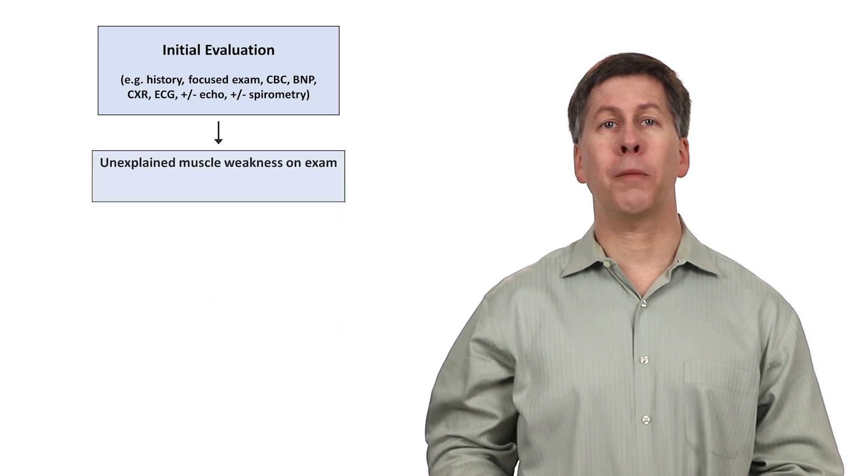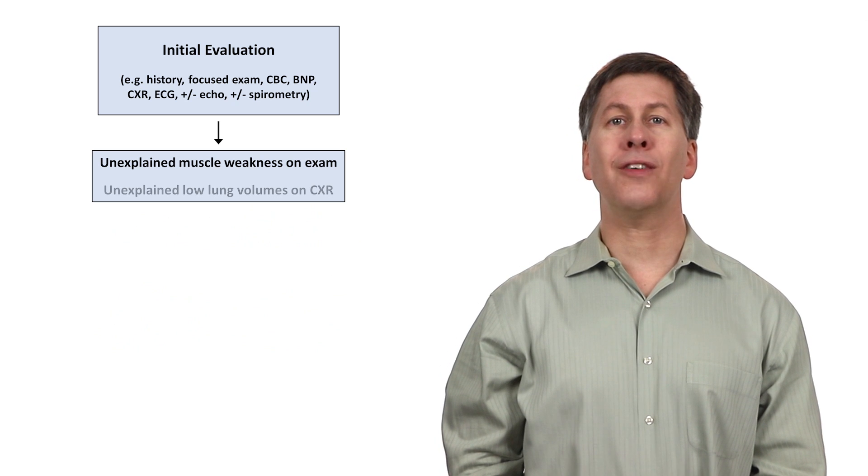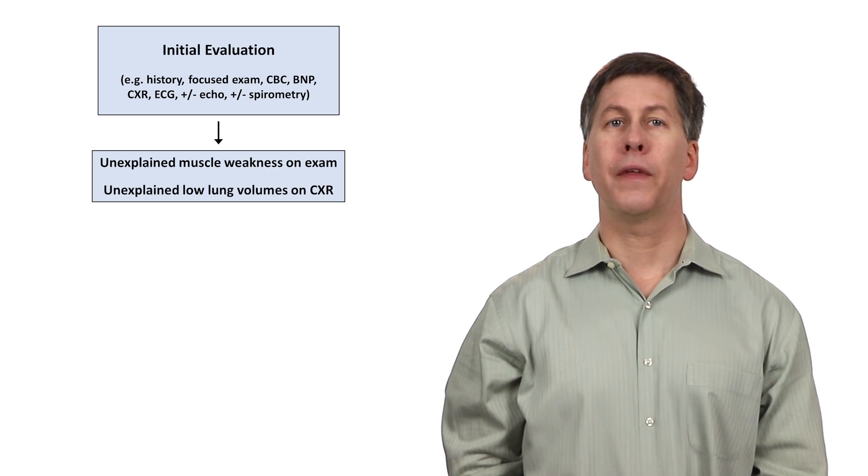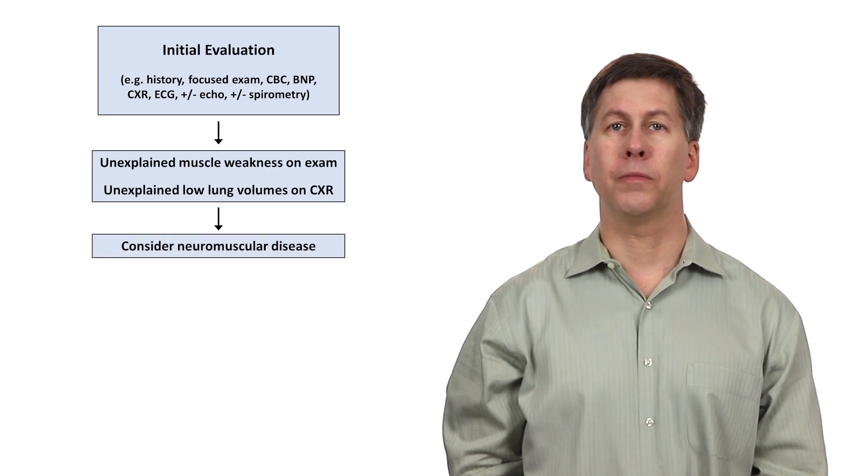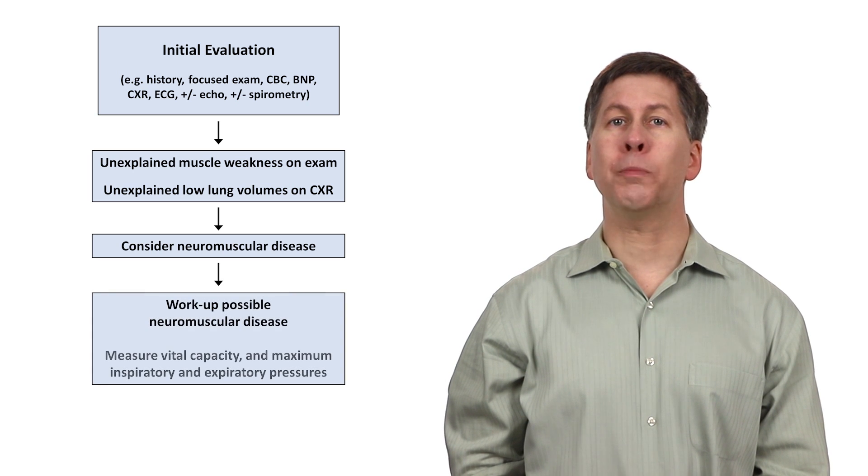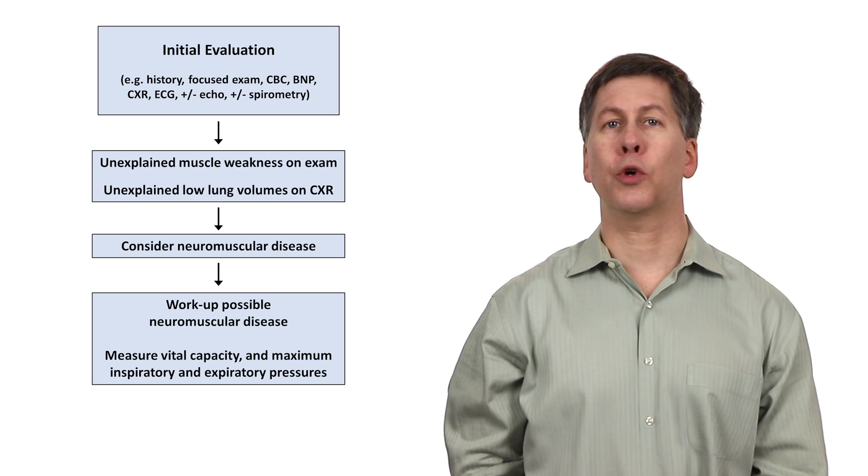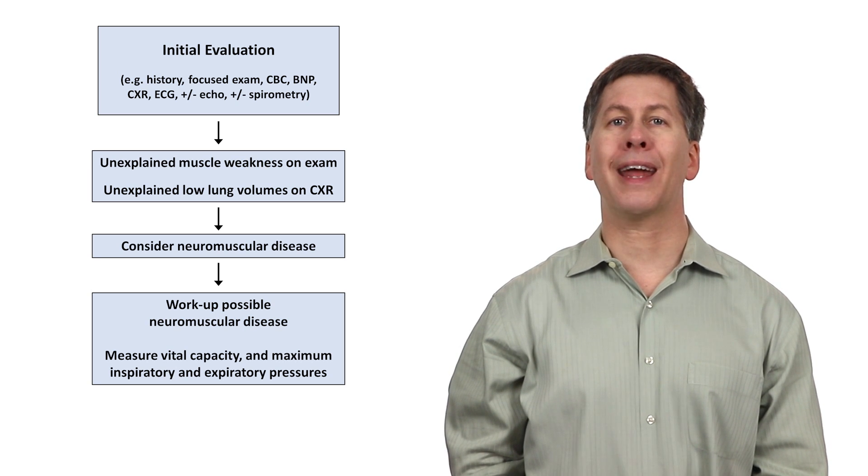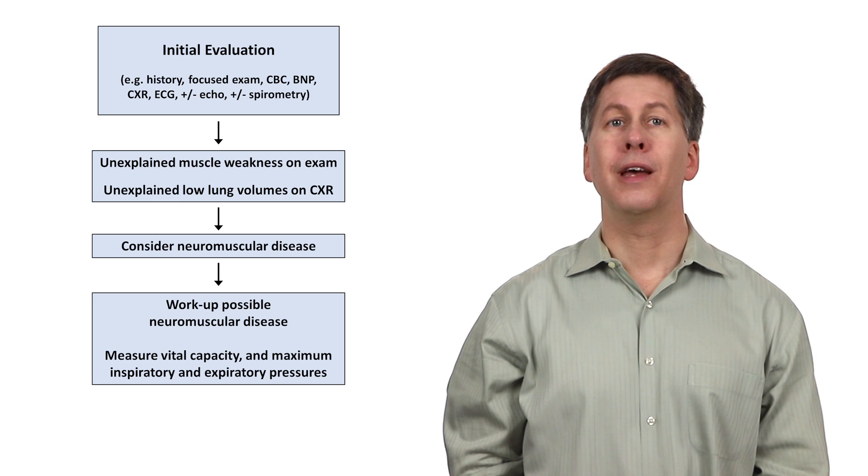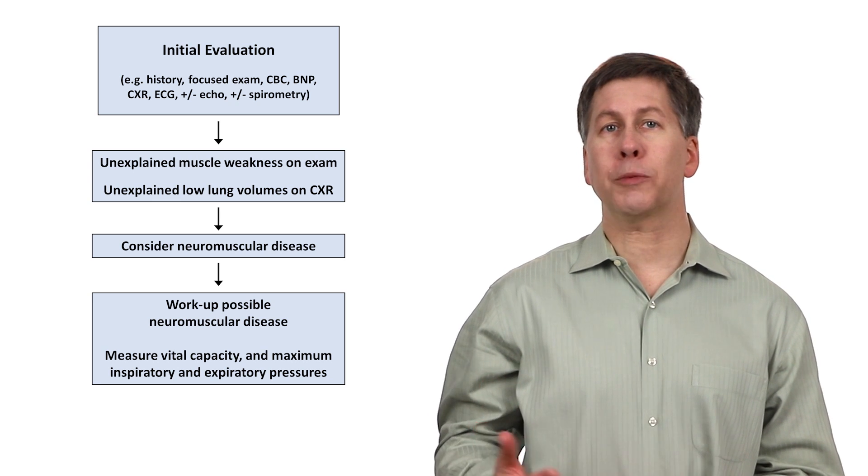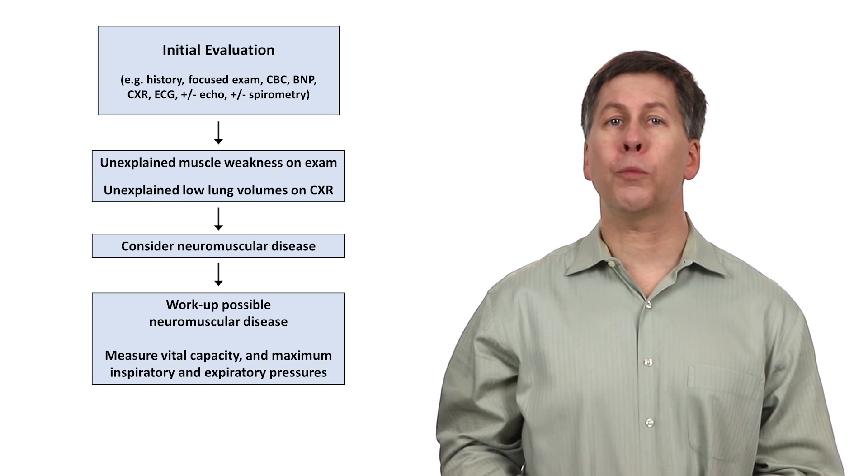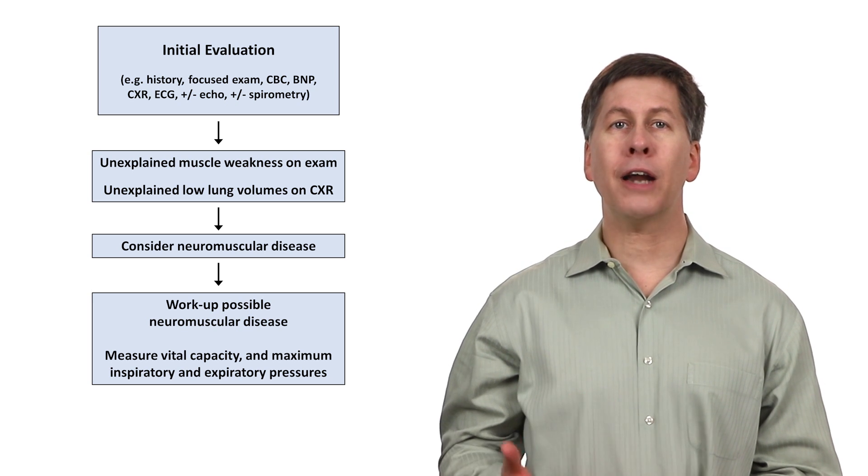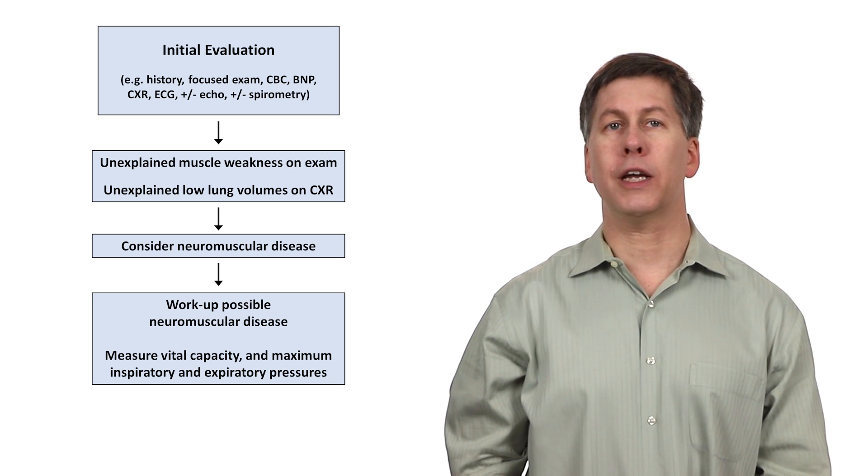If the patient has unexplained muscle weakness on exam and unexplained low lung volumes, consider neuromuscular disease. A workup for that includes measurement of the vital capacity and maximum inspiratory and expiratory pressures, which are measured by hand-held equipment, usually by respiratory therapists. If the lung tests are consistent with respiratory muscle weakness, further workup will depend upon the patient's history and any patterns in the remainder of the neuro exam.